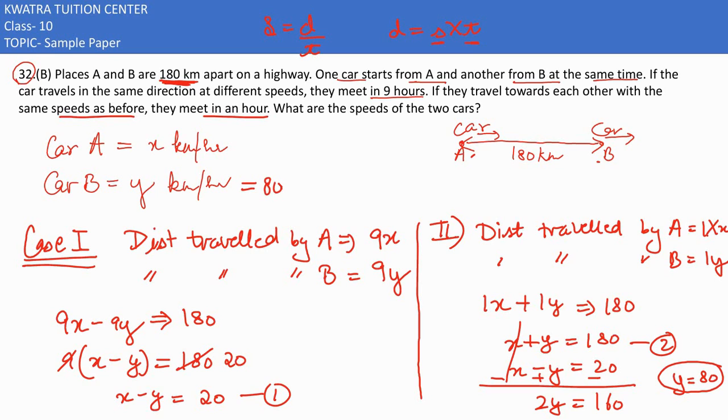It would be 80. This means car B is traveling at speed 80 km per hour. And car A's speed? x + y = 180, put 80 in place of y, so x would be 100. This is 100 km per hour. So speed of car A is 100 km per hour, and speed of car B is 80 km per hour.